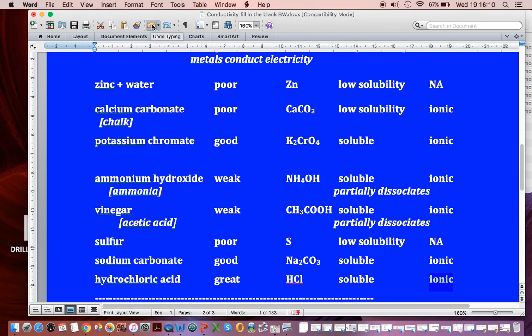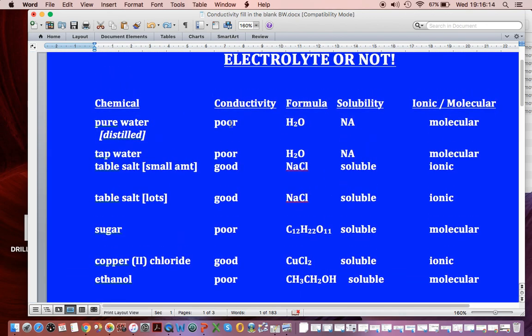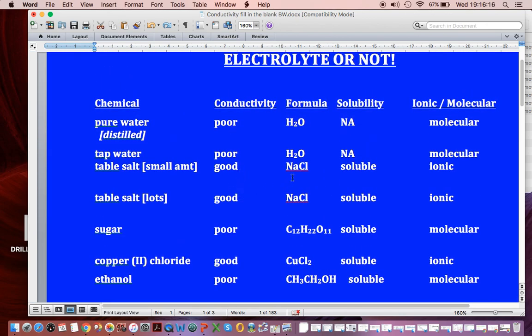So when you get a moment after you've copied all this, you're going to see that all the good conductors, the good and the great, had to be soluble, and they had to be ionic.